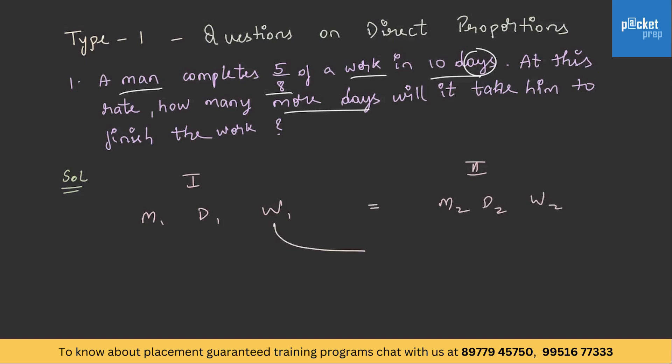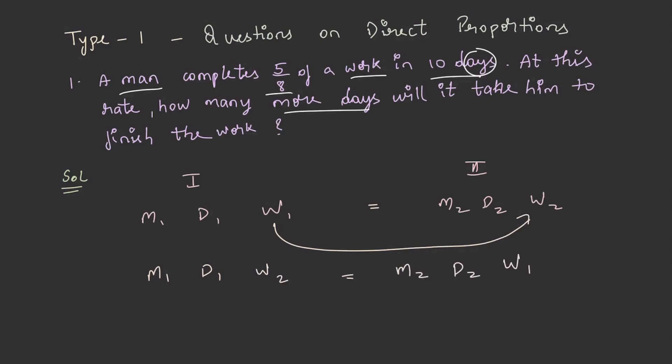But according to the formula, the works need to be exchanged. Therefore, the new formula will be M1*D1*W2 is equal to M2*D2*W1. As number of men in both the cases are 1, and in the first statement the number of days is 10, and we have to find out, let us name it as X. And the amount of work done in the first statement is 5/8, and what will be W2? The whole minus 5/8, that is 3/8. Therefore, 1 into 10 into 3/8 is equal to X*5/8, that is 30/8 into 8/5 is equal to X, and you will be getting X is equal to 6.